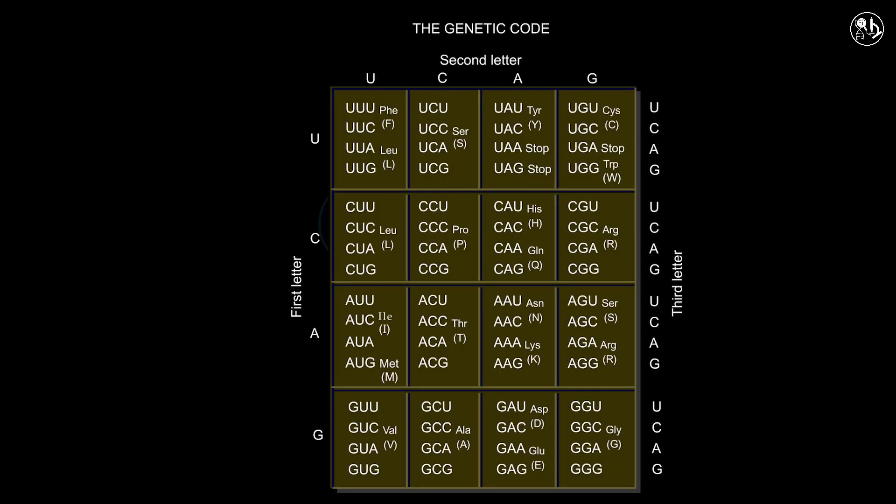The process of elongation persists until the ribosome encounters one of the three stop codons: UAG, UAA, or UGA. Stop codons differ from other codons as they do not correspond to any amino acid. Hence, no standard tRNAs possess anticodons that are complementary to those stop codons.